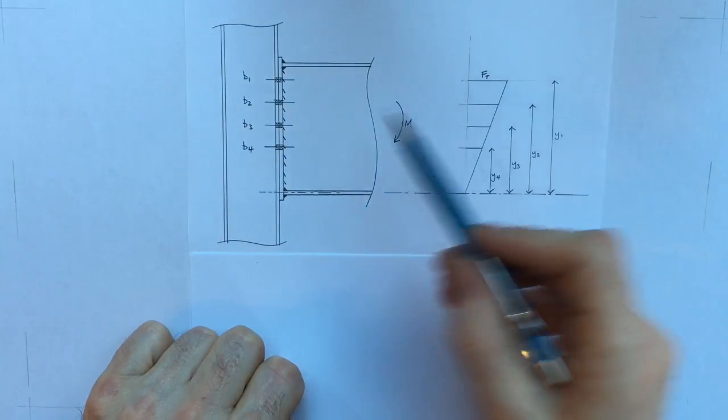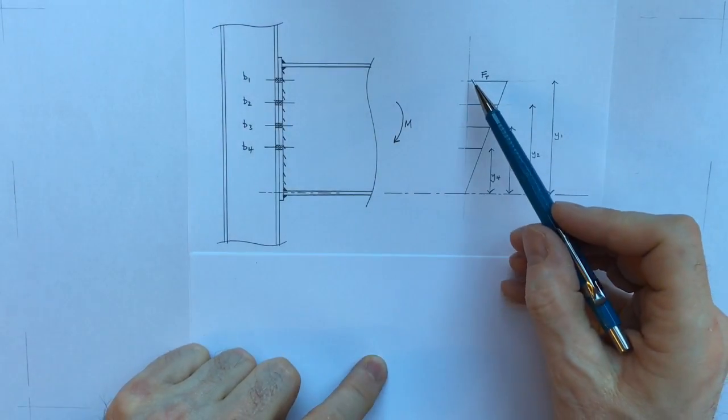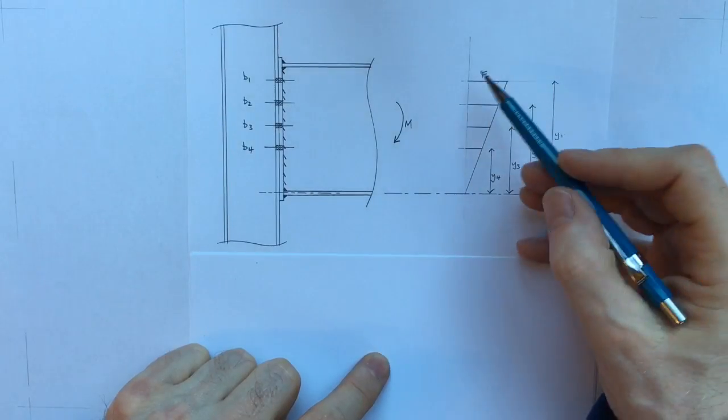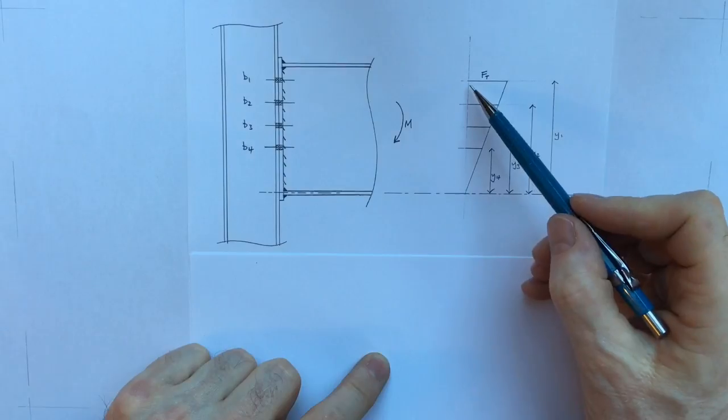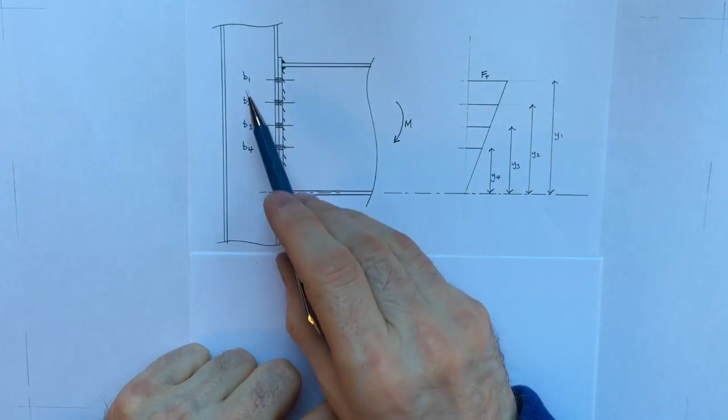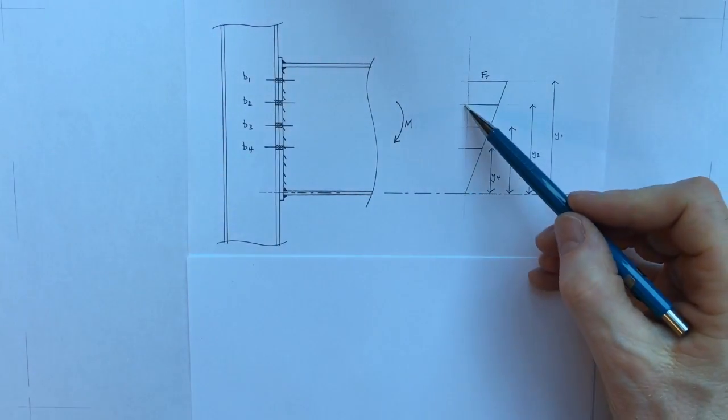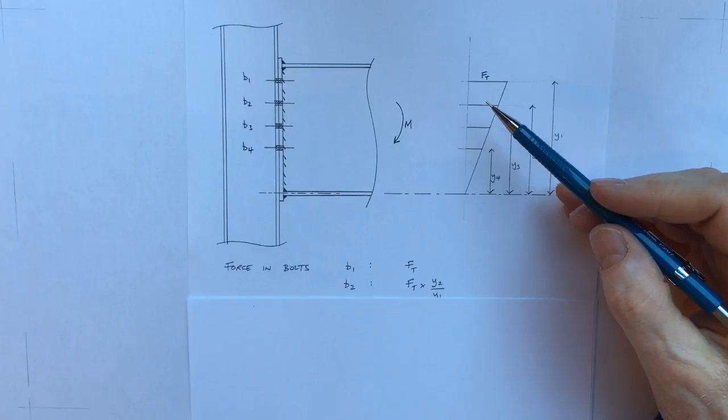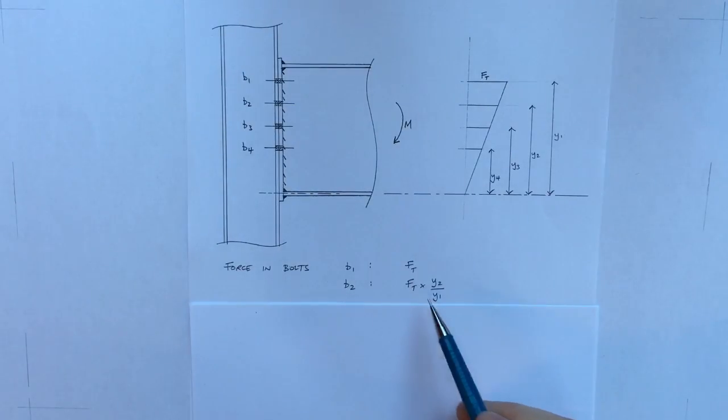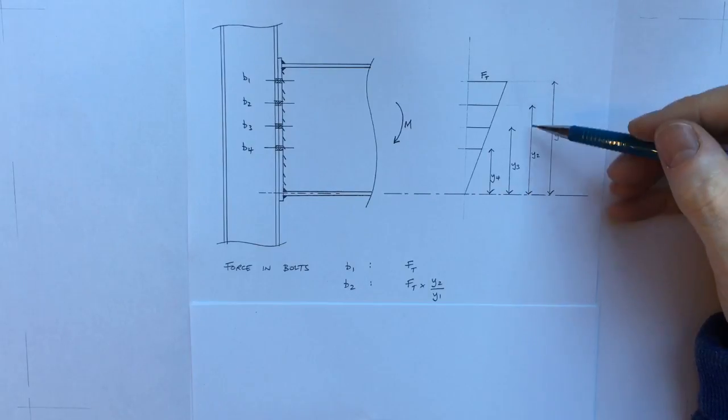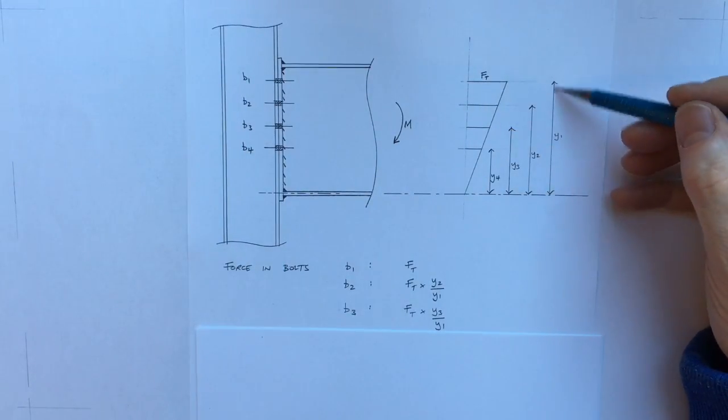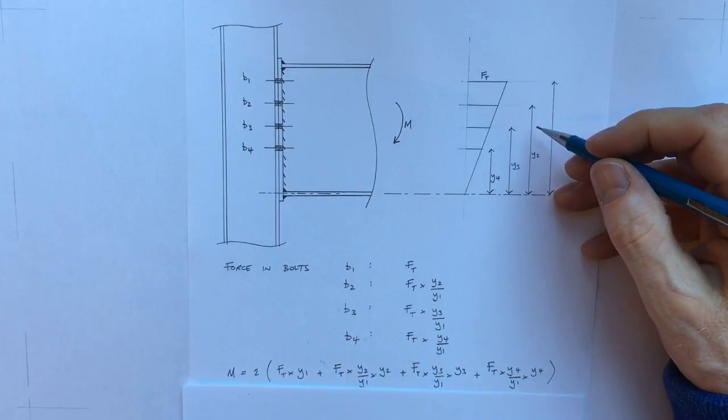If the first bolt is subjected to a certain strain that strain is directly proportional to the stress, and that stress is going to lead us to the tensile force within the bolt. If that bolt has got tensile force of ft kilonewtons at distance y1, then the force in bolt row b2 is going to be ft times y2 divided by y1, so it's in proportion to these distances. The same goes for bolt row b3, it's ft times y3 divided by y1.